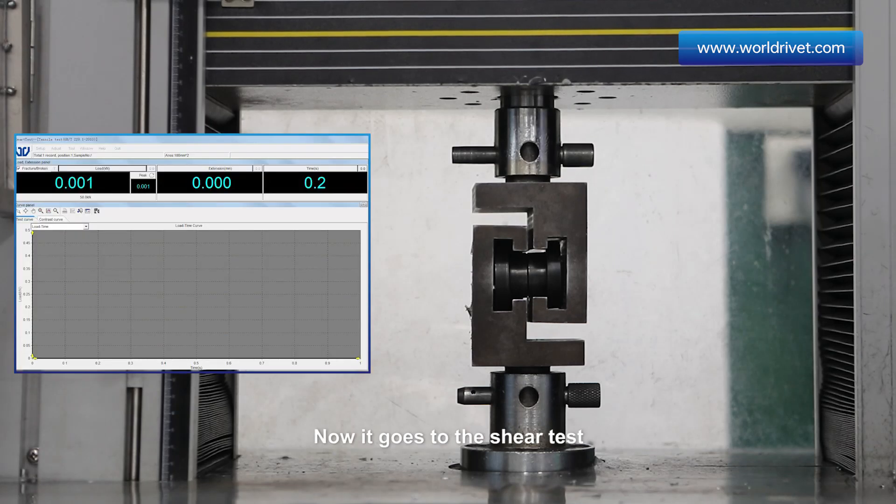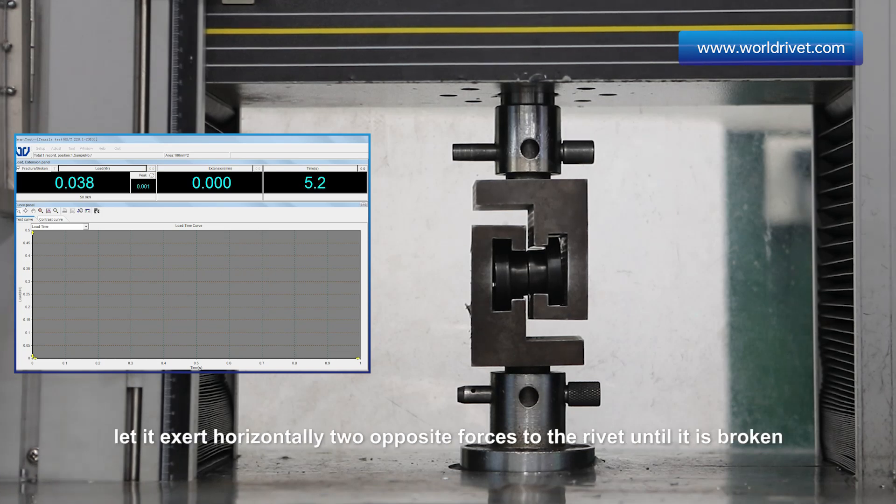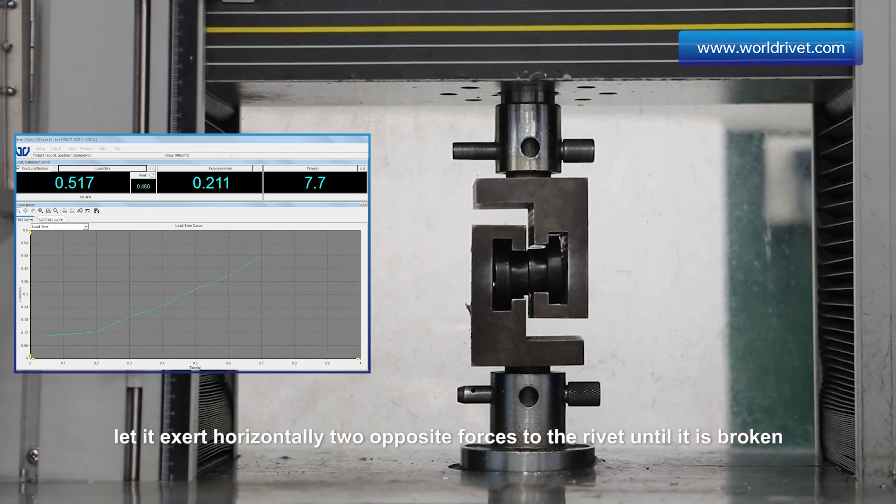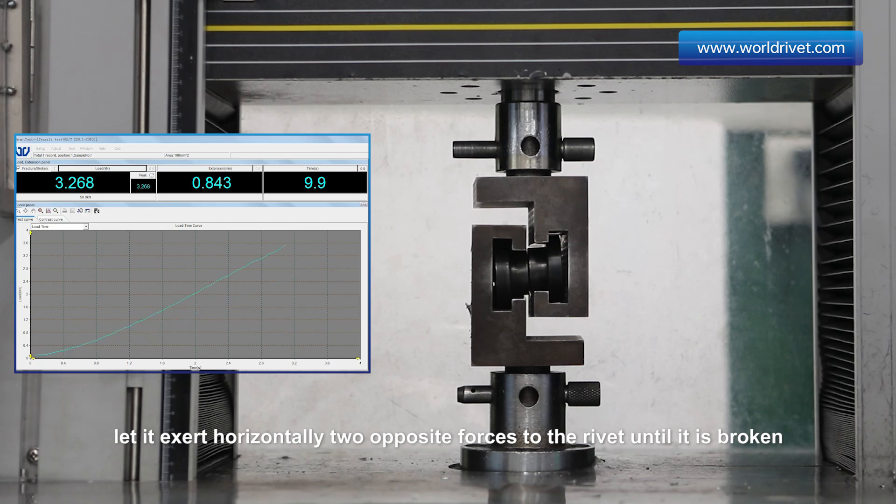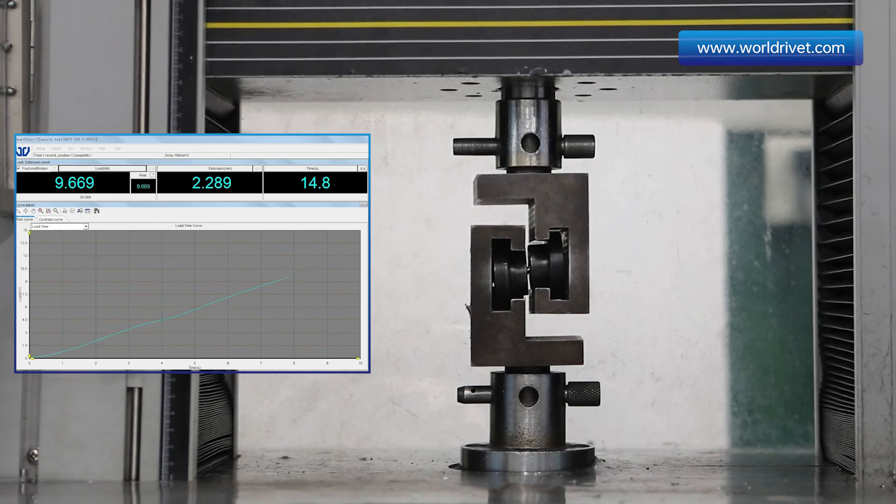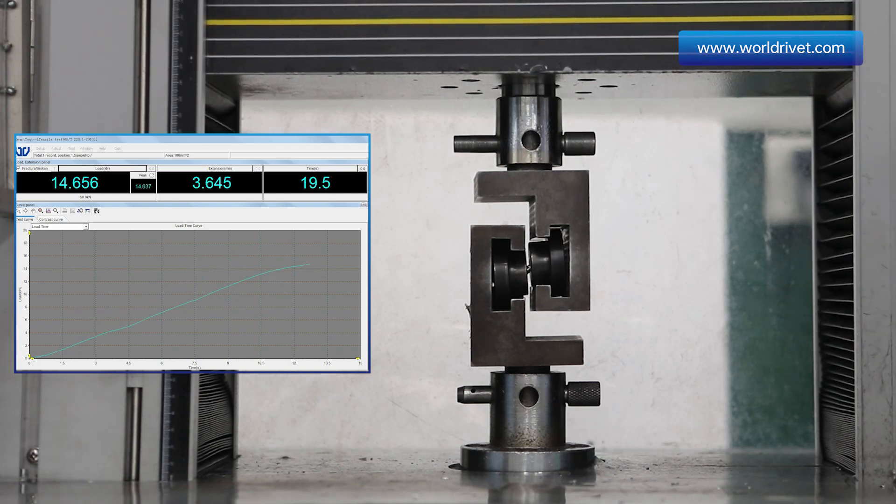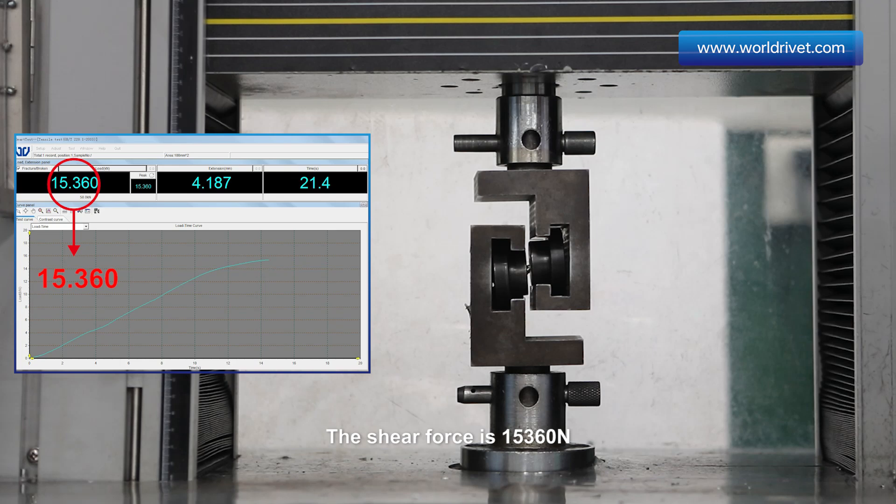Now it goes to the shear test. We put the fixture into the machine and press the button. Let it exert horizontally two opposite forces to the rivet until it is broken. The shear force is 15360 N.